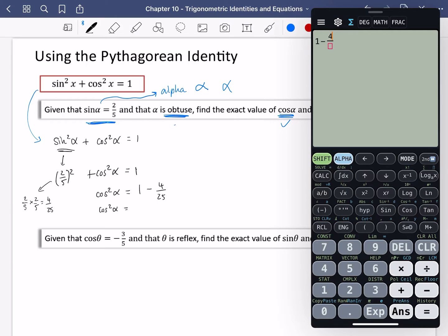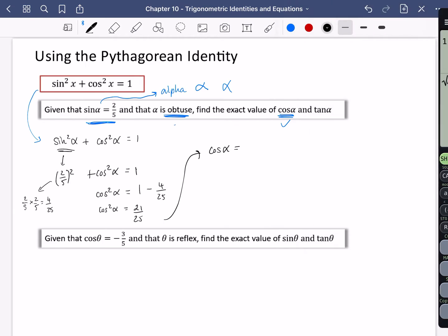So we're going to do one minus four over 25. One minus four over 25 is 21 over 25. And so moving up here, so I've got a bit more space, this tells me that cos alpha is the square root of that. I'm just going to root my answer and it's root 21 over five.